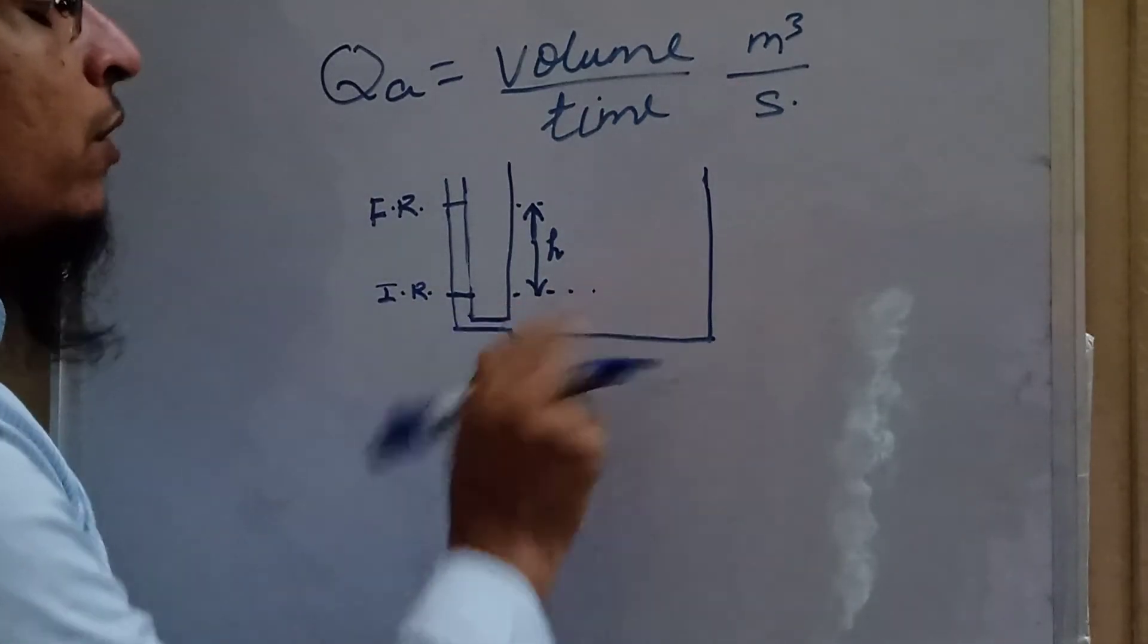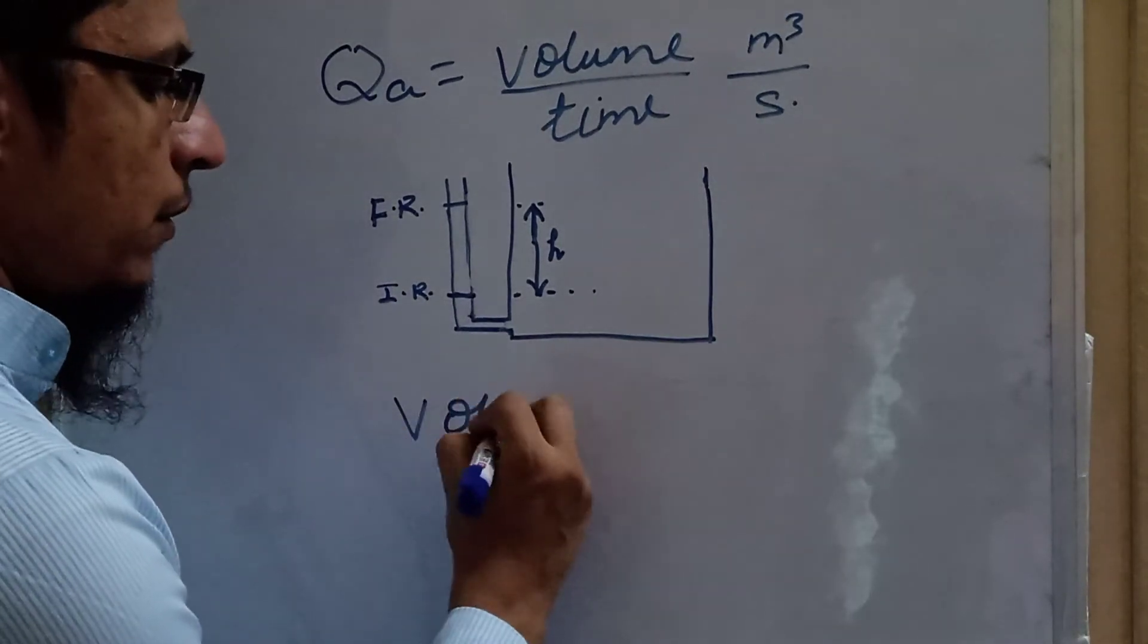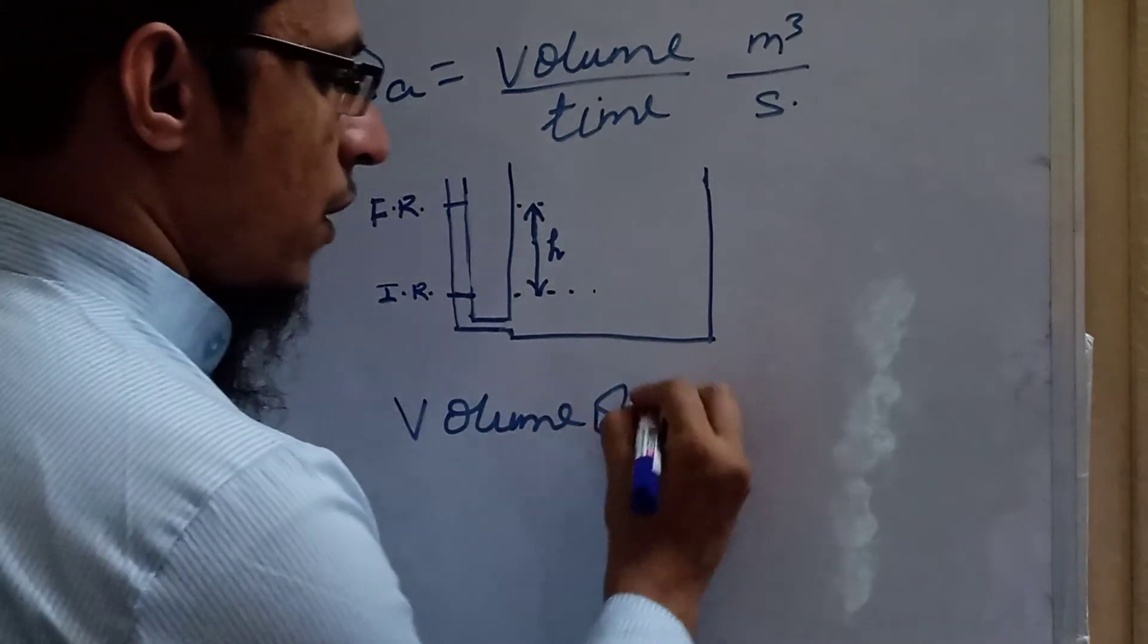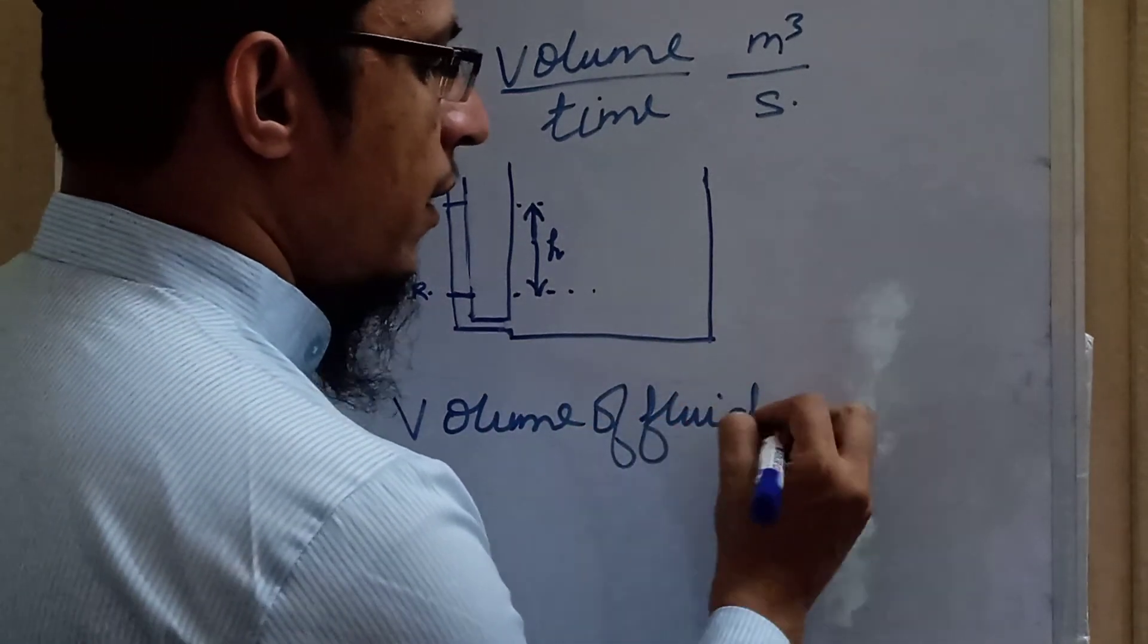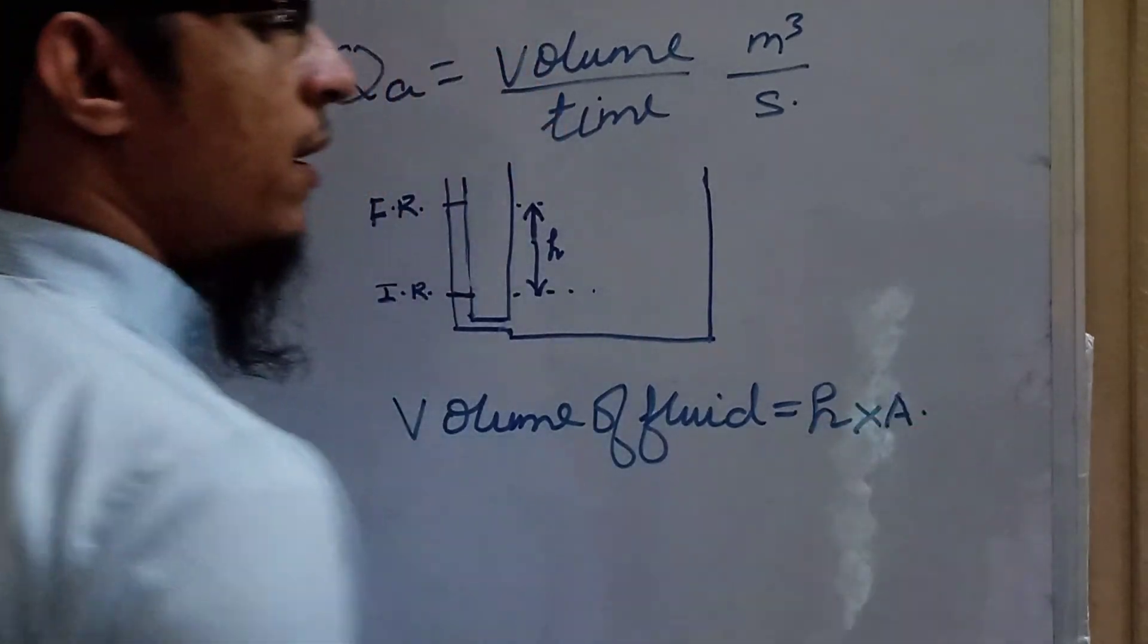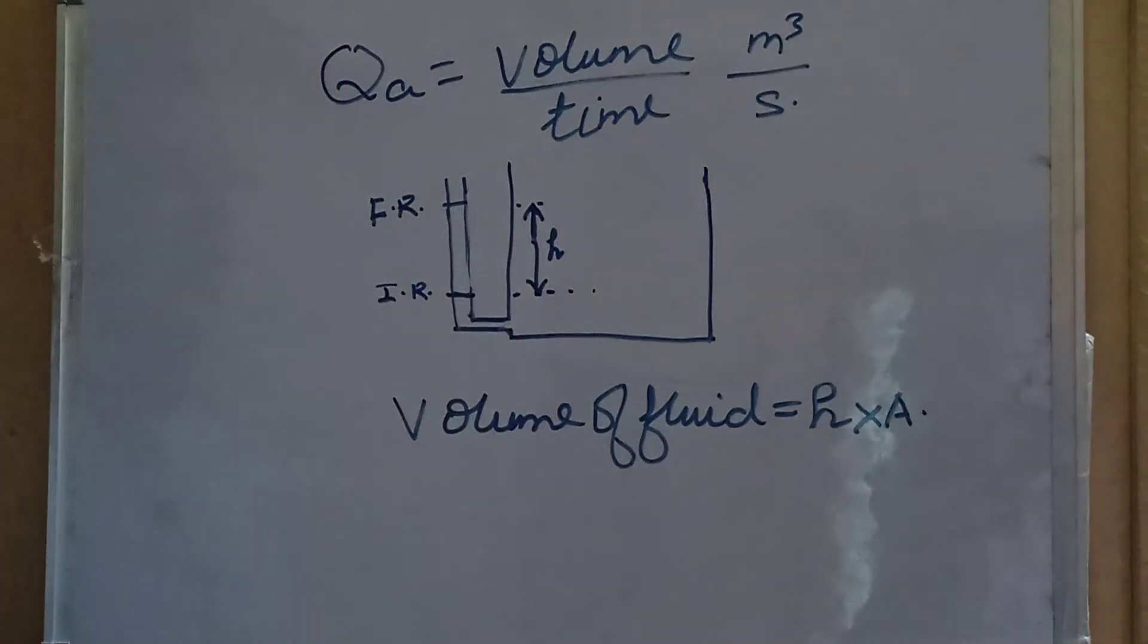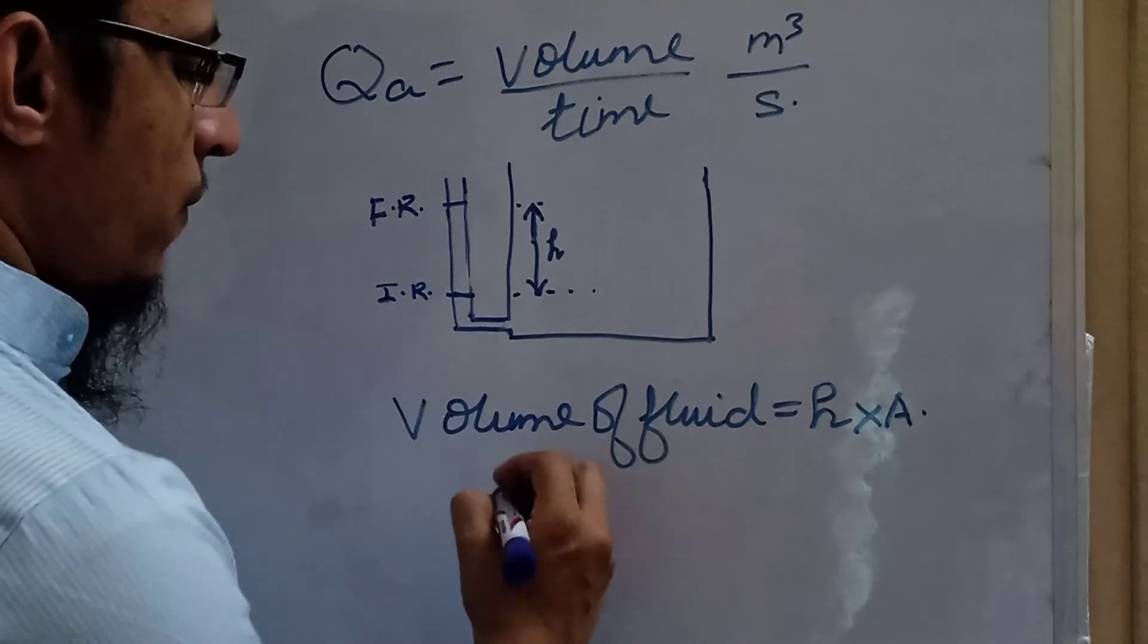So we can write the volume of fluid or water collected is equal to h into A, where A is the cross-sectional area and h is the height we have measured between the final and initial reading. And now if we know the volume, then discharge will be equal to volume upon time, so we have h into A upon t.